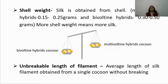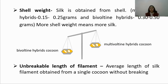Shell weight is very important — more so than total cocoon weight — because silk is obtained from the shell. Multivoltine and hybrid varieties have a shell weight of around 0.15 to 0.25 grams, whereas bivoltine and their hybrids have 0.30 to 0.50 grams. More shell weight means more silk.